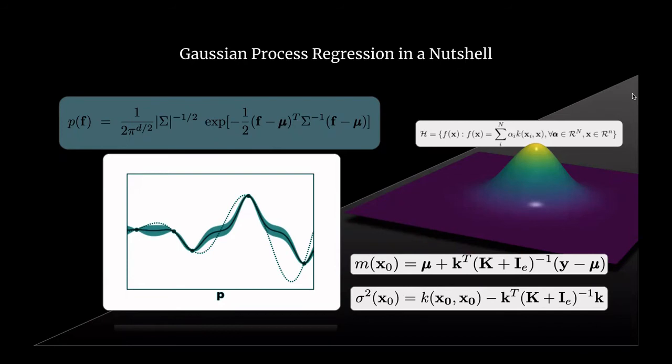The Gaussian probability density function can be learned based on data and then conditioned to yield the posterior I was mentioning earlier. And based on the posterior, we can make decisions how to optimally investigate the parameter space.